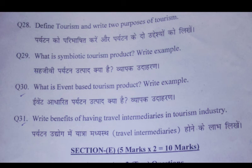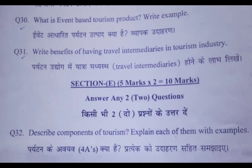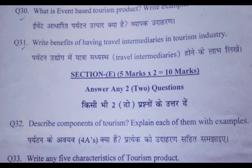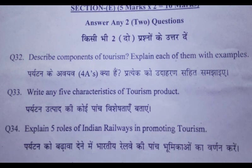Question 30: What is event-based tourism product? Write an example. Question 31: Write the benefits of having travel intermediaries in the tourism industry. Give answers to any two questions. Question 32: Describe the components of tourism and explain each with an example. Question 33: Write any five characteristics of tourism product.